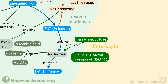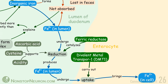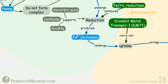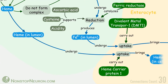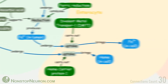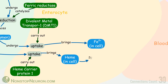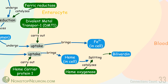Divalent metal transporter 1, present on the membrane of the enterocyte, carries out uptake of ferrous iron into the cell. Heme is taken up into the cell by heme carrier protein 1. In the cell, heme is split by heme oxygenase to produce biliverdin and ferrous iron.